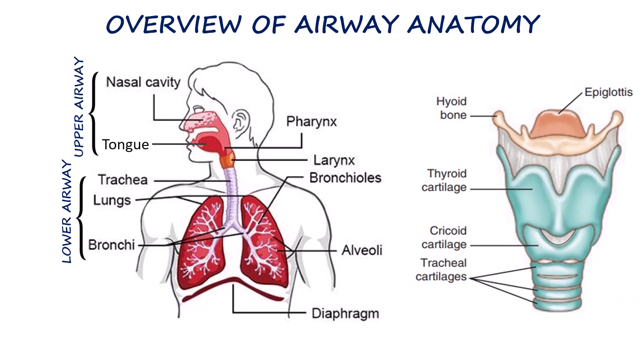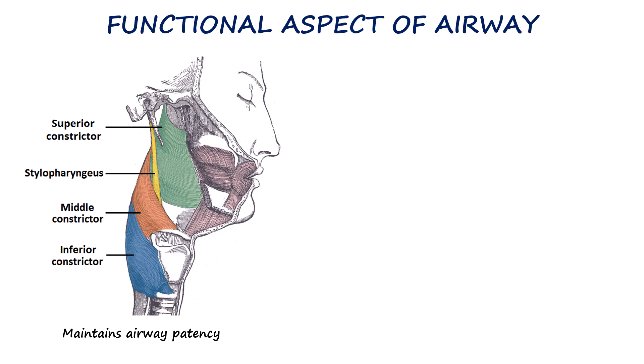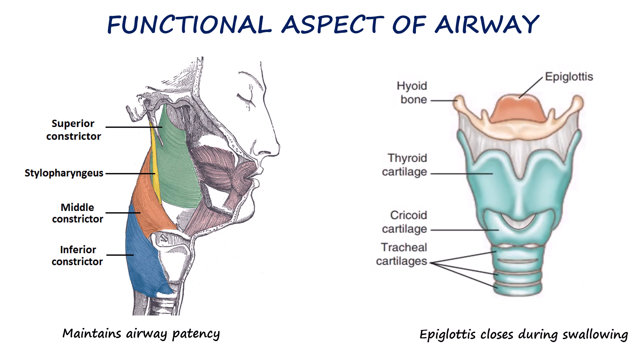The tongue is the most common cause of airway obstruction in unconscious patients. It is also important to understand how the airway structures function during breathing and airway manipulation. The pharyngeal muscles help maintain airway patency when a patient is awake, but they relax under anesthesia or sedation, which can lead to airway collapse. These protective mechanisms can be compromised during airway interventions or when the patient is unconscious, requiring simple but effective techniques known as basic airway maneuvers.